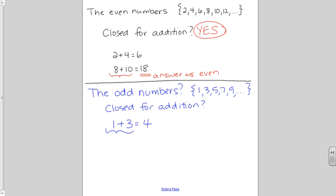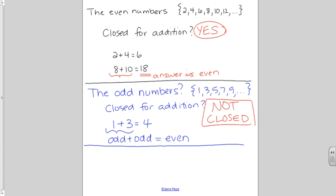So, if I take and I add an odd number plus another odd number, if they were closed, the answer has to be an odd number. But in our case, the answer is even. So, what does that tell us? They are not closed. The odd numbers are not closed for addition because when I add two odd numbers, I get an even number. Just because the odd numbers aren't closed for addition doesn't mean they might not be closed for another operation.